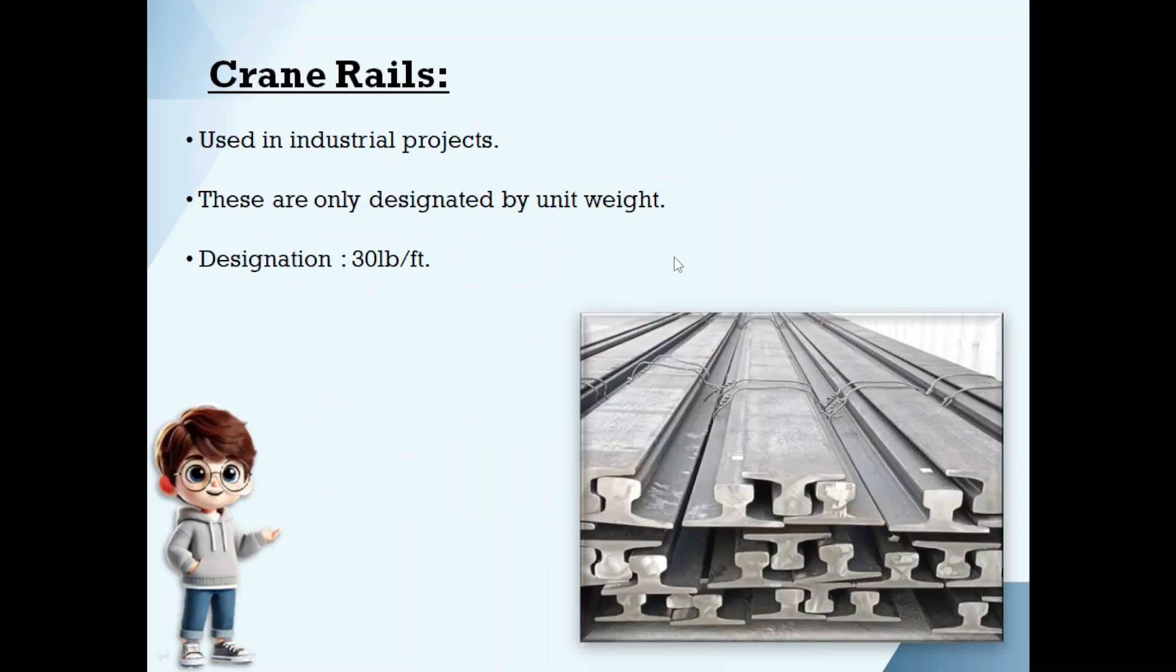Crane rails. Usually these crane rails will be used only in industrial projects. These are only designated by unit weight. We won't show any cross sectional parameters in the designation, we will just show unit weight. 30 pounds per feet means if you take a 1 foot long crane rail of that particular size, its weight is 30 pounds.